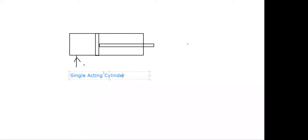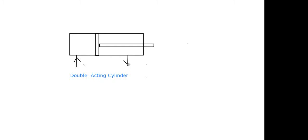In a double acting cylinder, the liquid acts on both sides. If there are two ports and liquid comes and goes out from these two directions, then it is called a double acting cylinder. These two horizontal lines show the ports, and liquid acts on both sides of the piston — that's why it becomes a double acting cylinder.